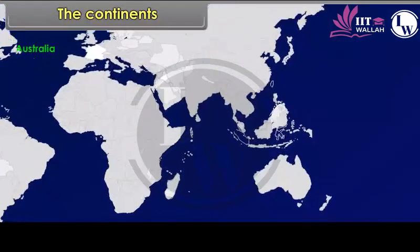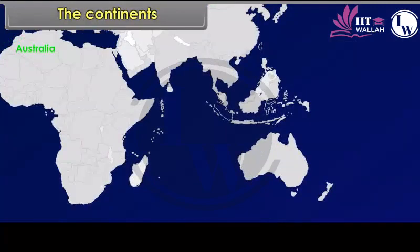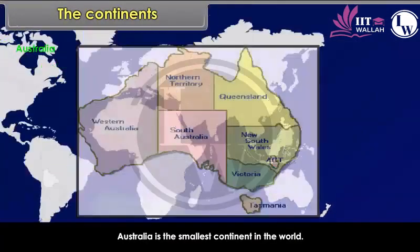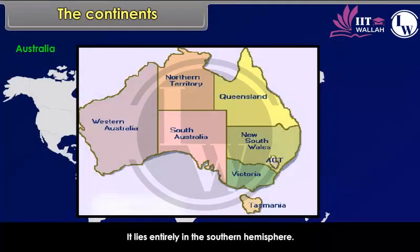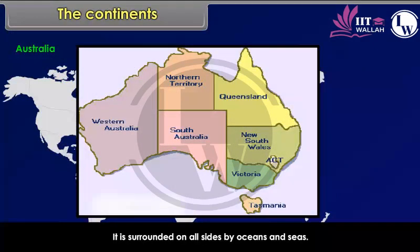Australia is the smallest continent in the world. It lies entirely in the southern hemisphere. It is surrounded on all sides by oceans and seas. Because of its smallest size, it is called an island continent.